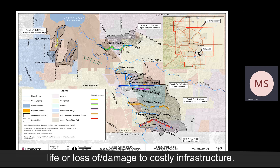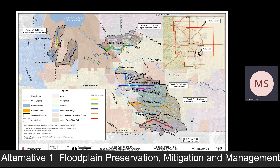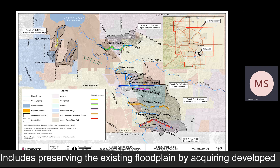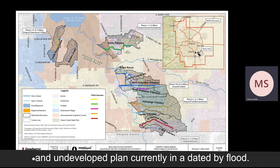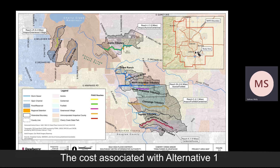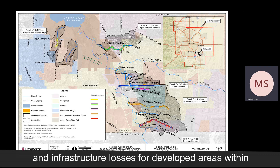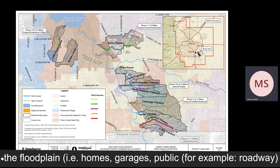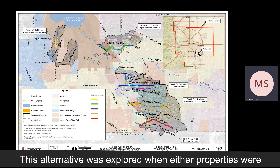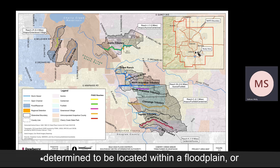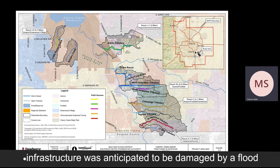Alternative 1 or the Floodplain Preservation, Mitigation, and Management Alternative includes preserving the existing floodplain by acquiring developed and undeveloped land currently inundated by flooding. The costs associated with Alternative 1 include acquisition of inundated, undeveloped land and infrastructure losses for developed areas within the floodplain — for example, homes, garages, and civil infrastructure. This alternative was explored when either properties were identified as being within the floodplain or significant civil infrastructure damages are anticipated.